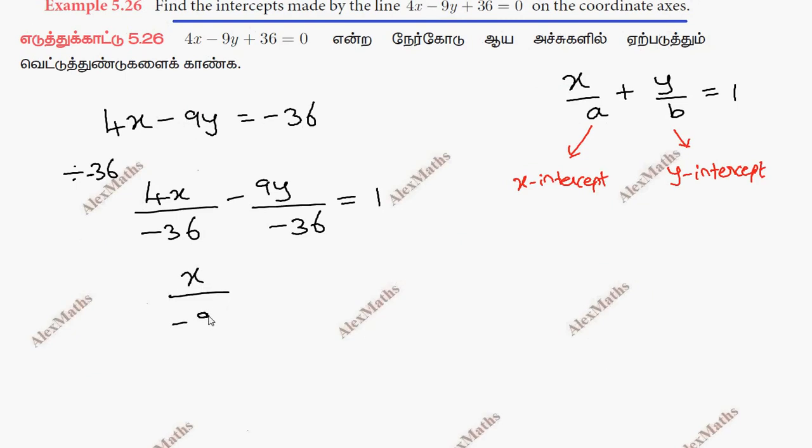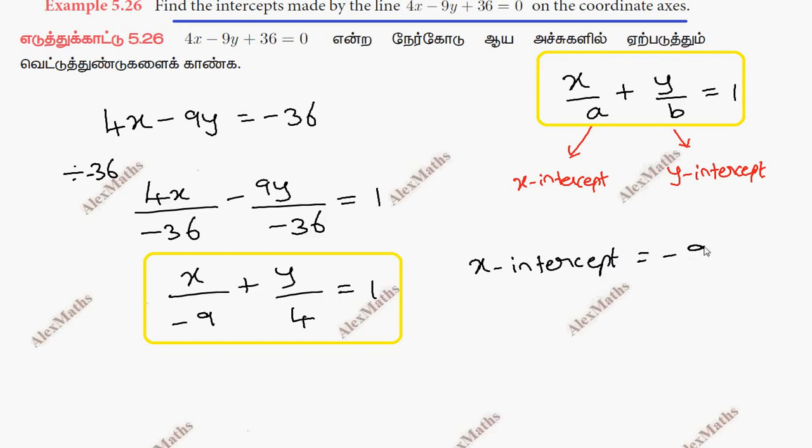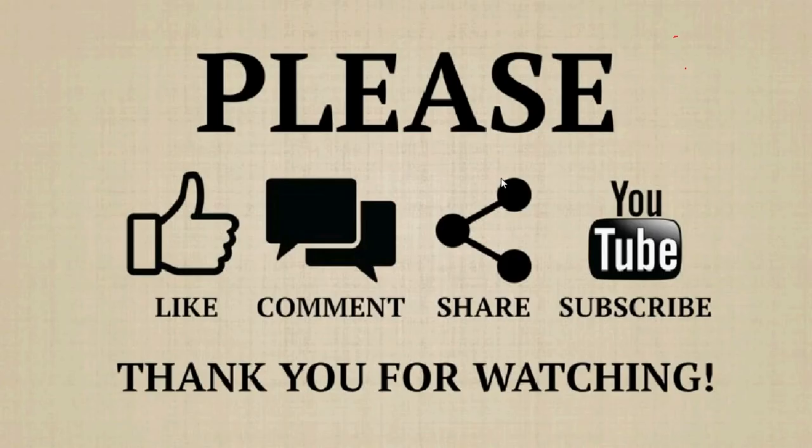x by minus 9 plus y by 4 equal to 1. Once converted to this form, x coefficient is the x-intercept. So x-intercept value is minus 9 and y-intercept value is 4.